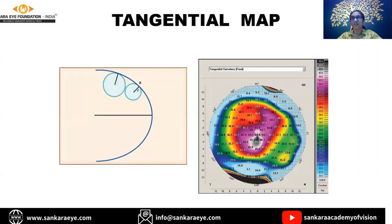Tangential maps are very good - not necessarily for screening, but since they use geometrical tangential circles rather than tangential lines, any subtle change between two different points is greatly amplified. Tangential maps are very useful when planning topo-linked surgeries or trying to find out the extent of corneal keratoconus effects.